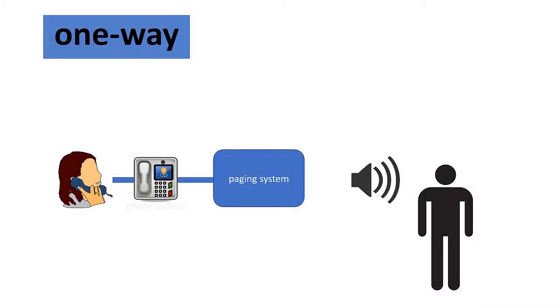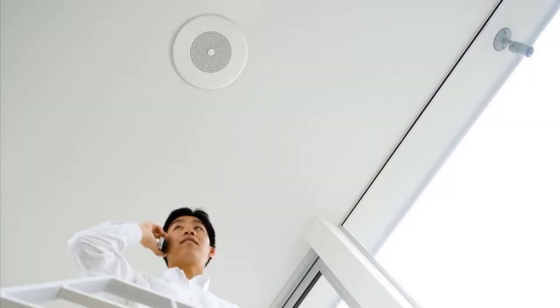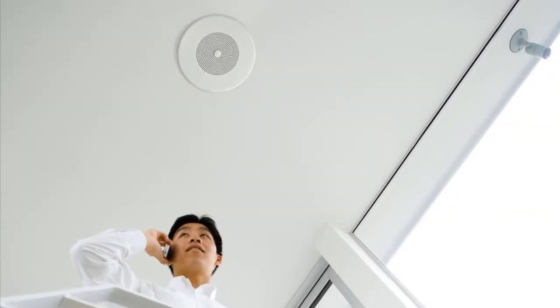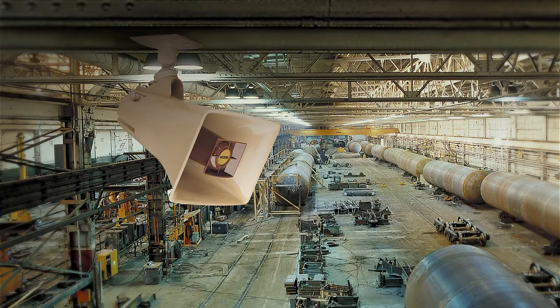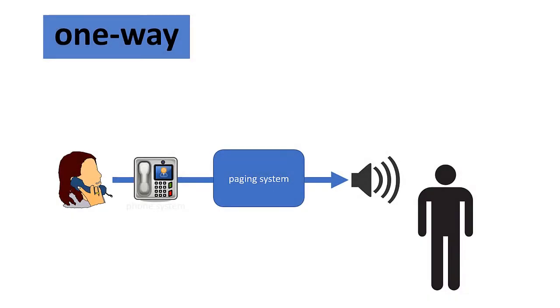One-way is obviously one-directional. This is usually a voice page or an announcement. The people hearing a one-way voice page or announcement have no way to respond to it through the paging system.